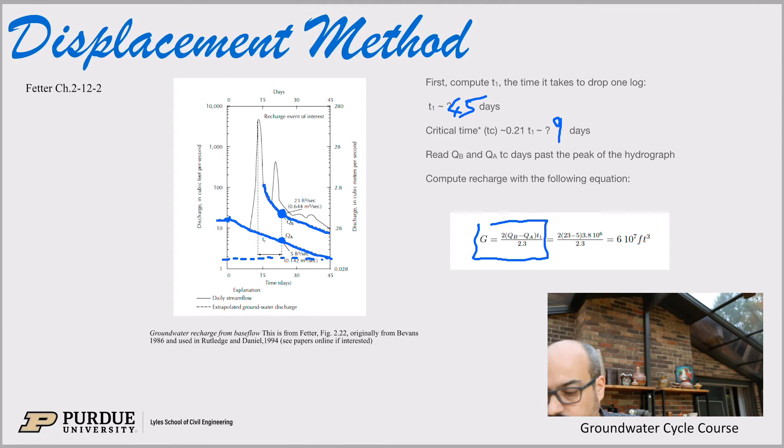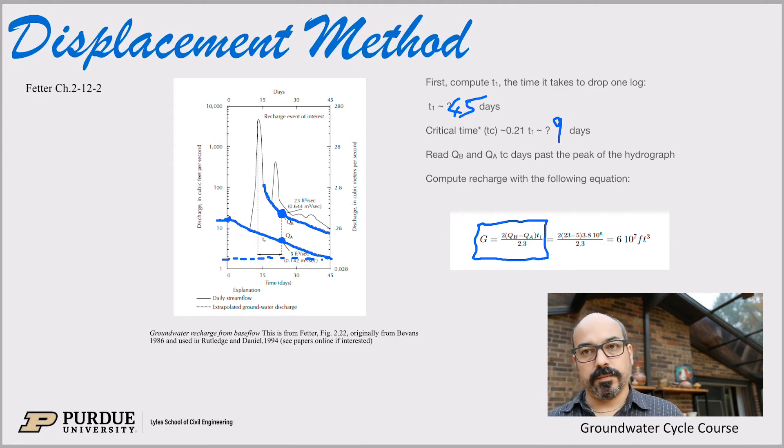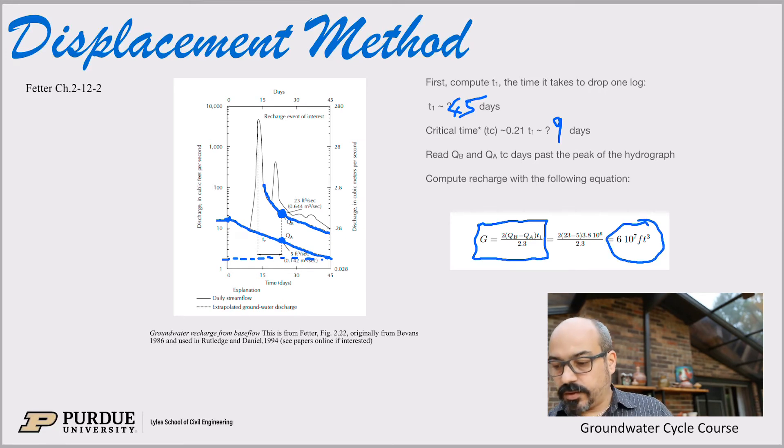And then what you do is you plug it in this equation here. So the groundwater recharge, and again, I'll go through the derivation of this in the next slide, is two times the difference in discharge times the T1, so 45 days, divided by 2.3. And if you calculate this, you can see that you get a volume of groundwater that has recharged during that one rain event. So we can calculate how much water we actually have in the ground now.